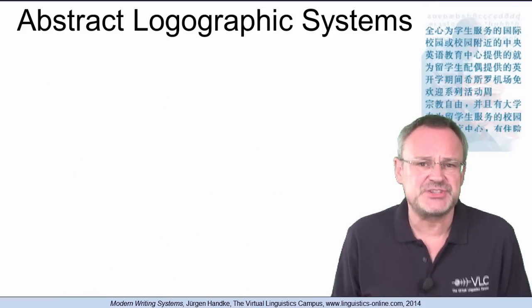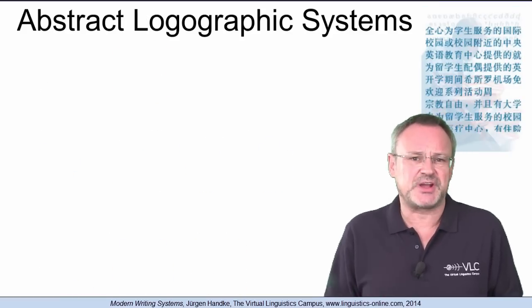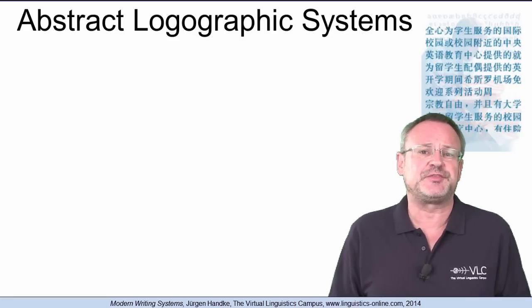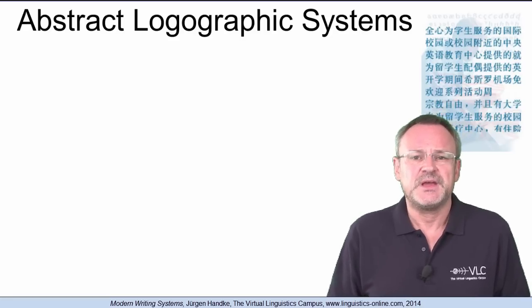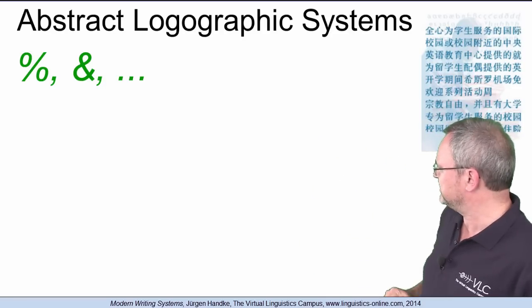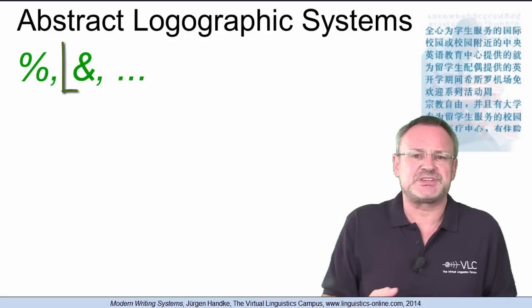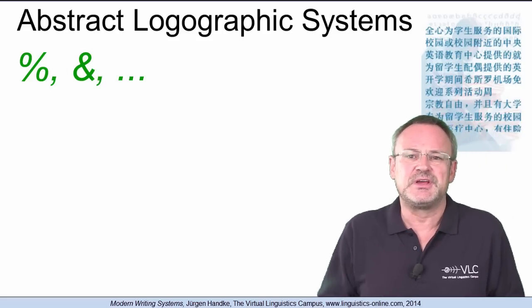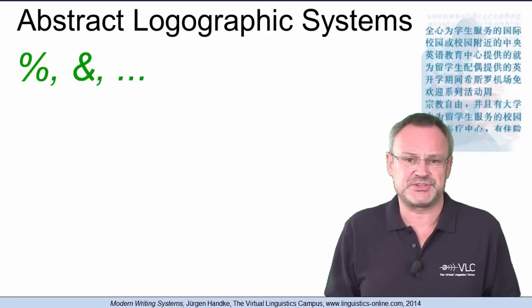Often, logographic writing systems make use of abstract logographic symbols whose meaning is no longer identifiable from their shape. Such symbols, for example, the percent symbol or the ampersand symbol used for AND, are even employed in phonographic writing systems.